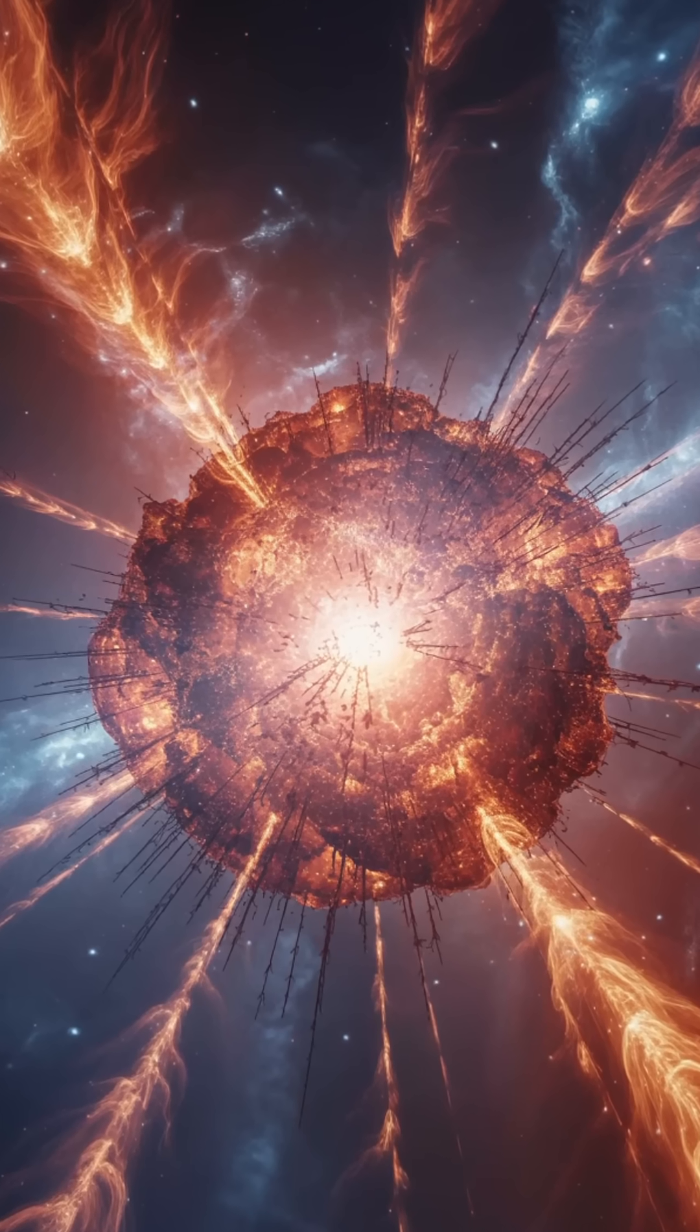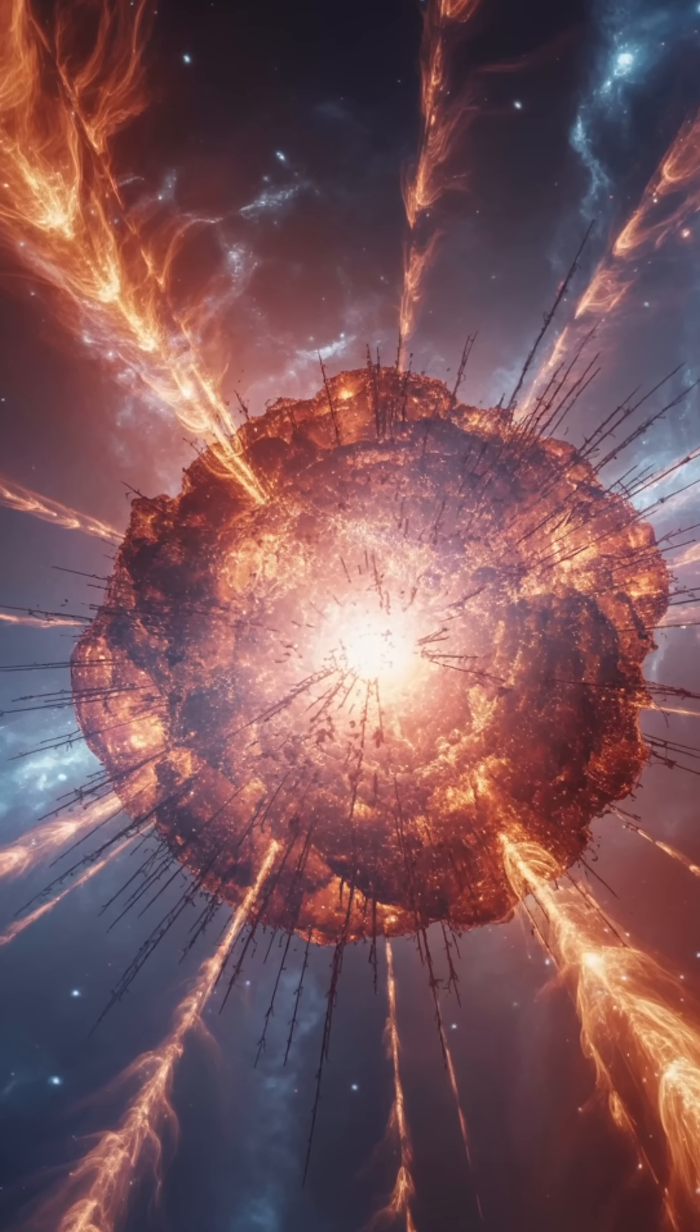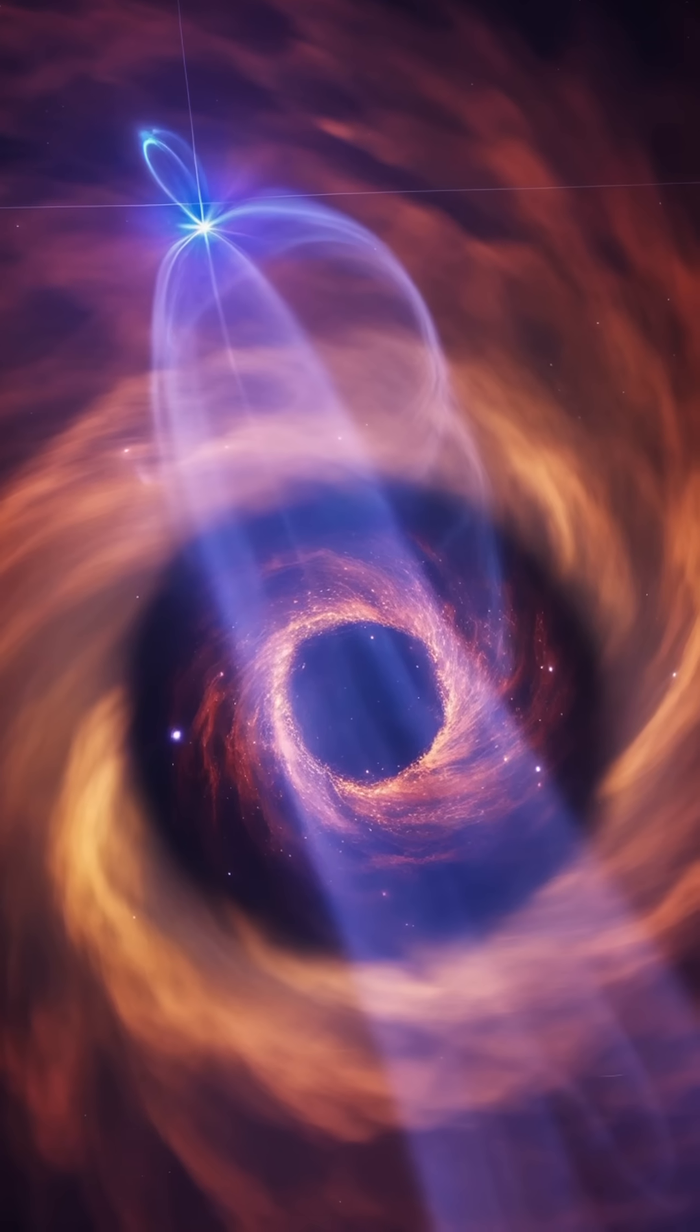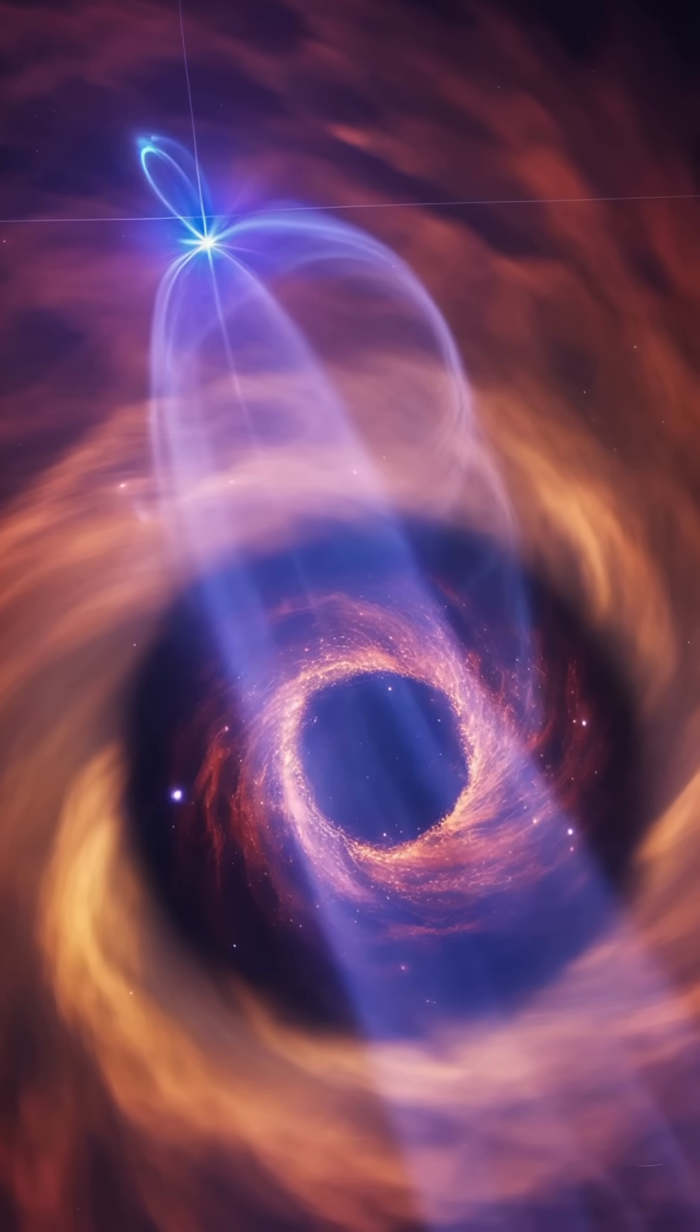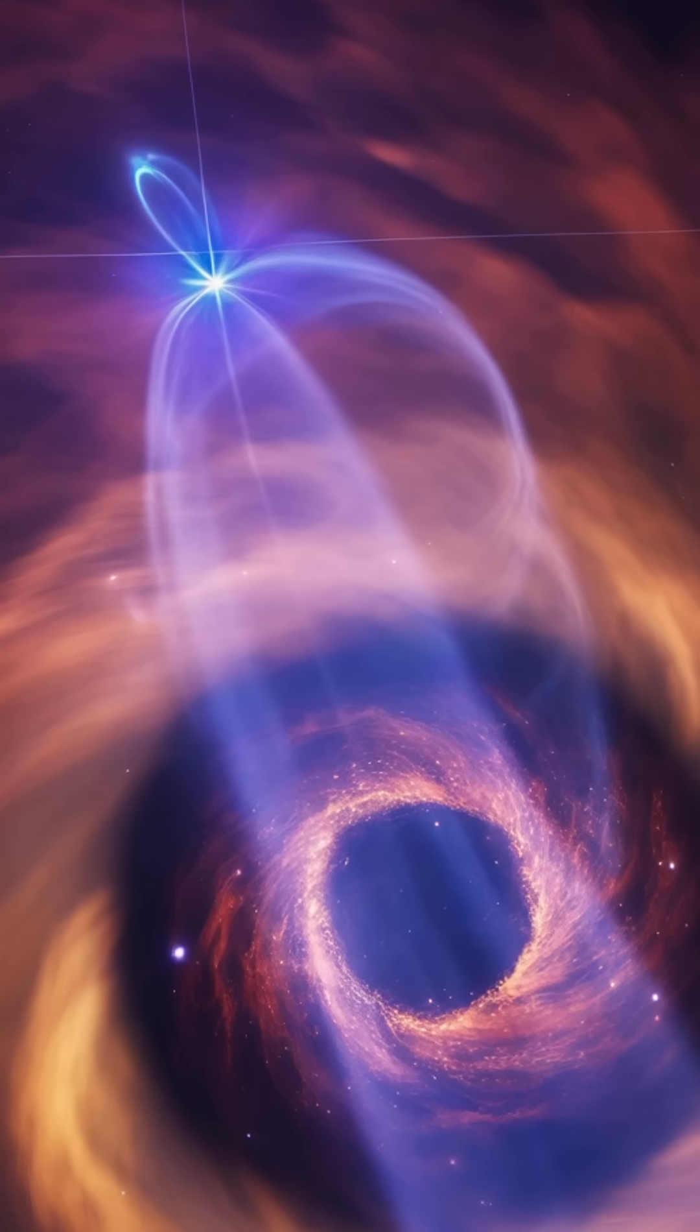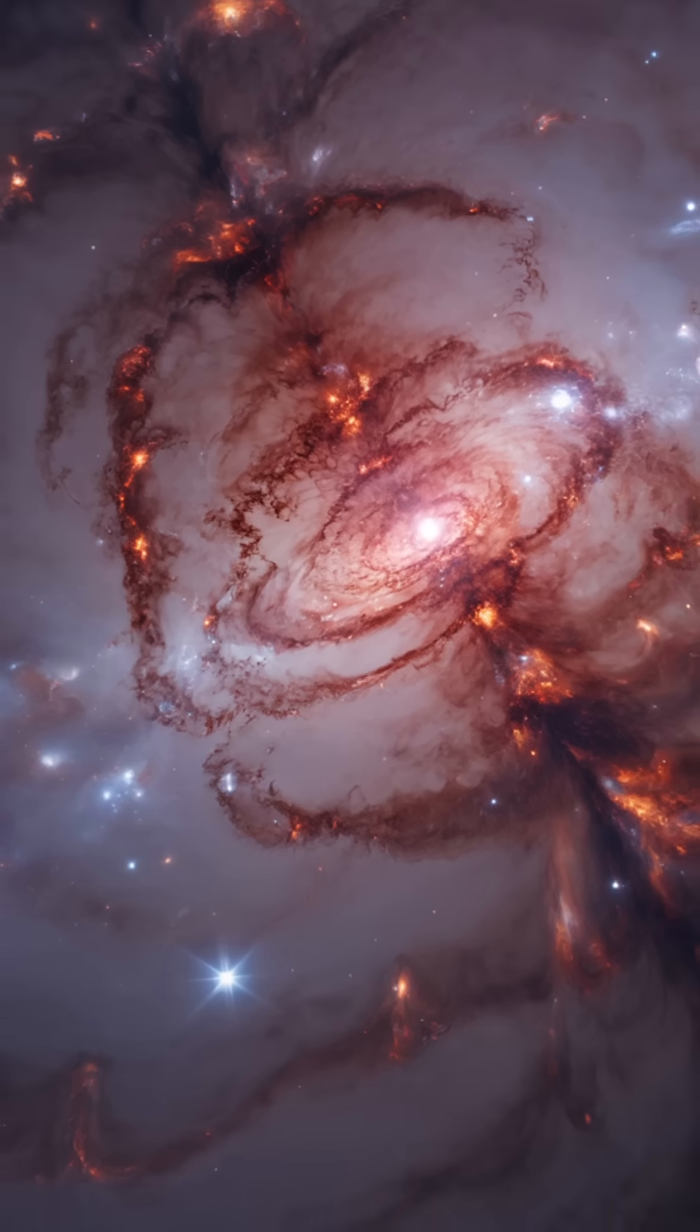But the fate of large stars is far more dramatic. When a massive star, at least eight times the mass of the sun, runs out of fuel, it can no longer support itself against the crushing force of gravity. The core collapses in a violent implosion, triggering a cataclysmic explosion known as a supernova.